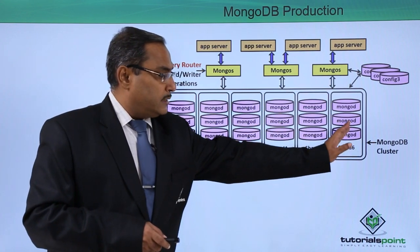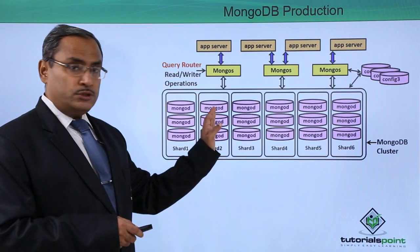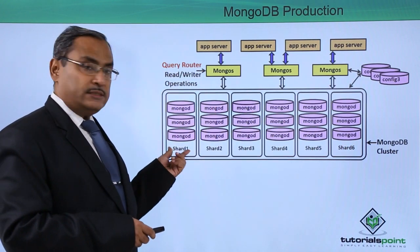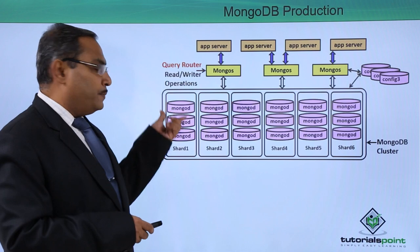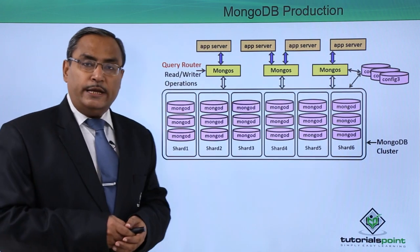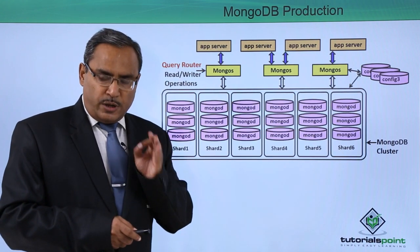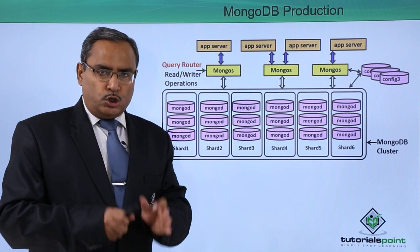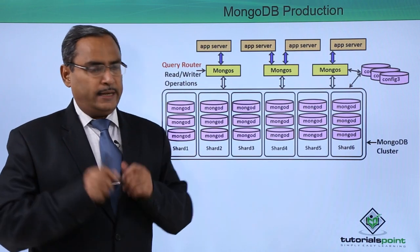The MongoDB cluster consists of multiple different nodes, and these nodes are known as shards. Multiple MongoDB process daemons will be executing to perform operations on the database.